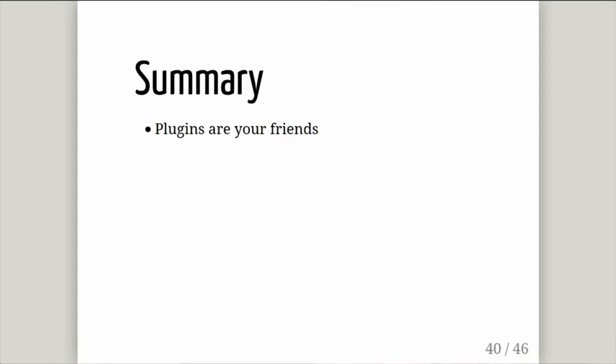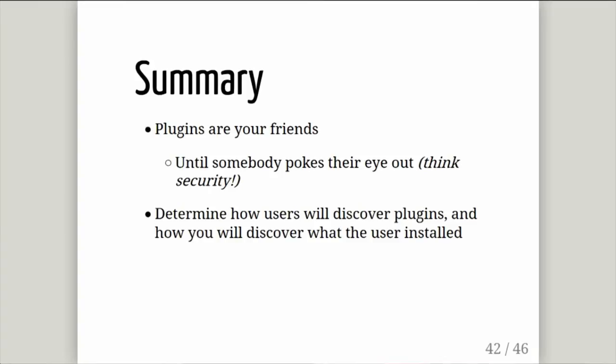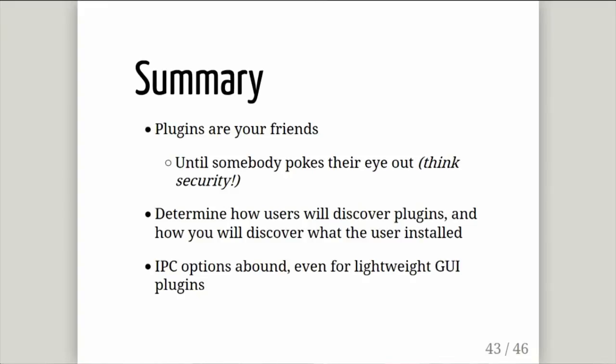So, plug-ins are your friends — at least until somebody blows their eye out. Make sure you're thinking through the security. If it's your own plug-ins, use signature-level permissions to make sure only you and the plug-in can talk to each other, and nobody can pretend to be a plug-in and cause problems. If you don't know how users are going to find the plug-ins, don't start coding — figure out your distribution strategy first, because it doesn't matter if you write plug-ins and users have no way to get them. You've got the full palette of Android IPC solutions, plus all sorts of other options including communication via shared preferences and various other mechanisms that may be useful in a particular situation.